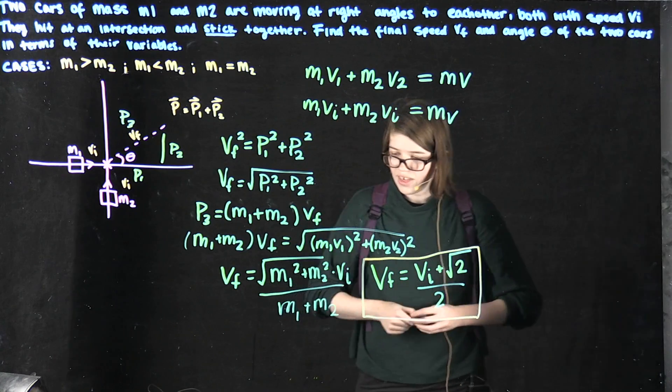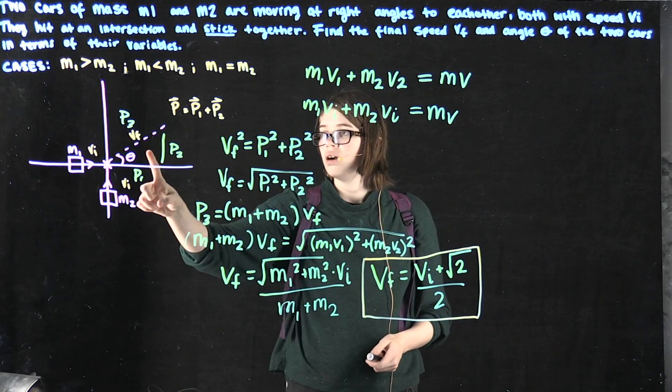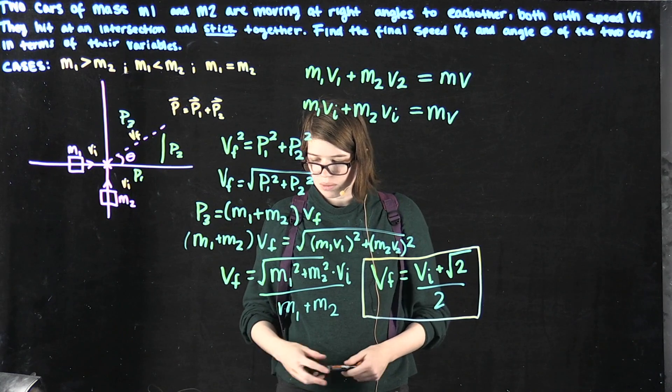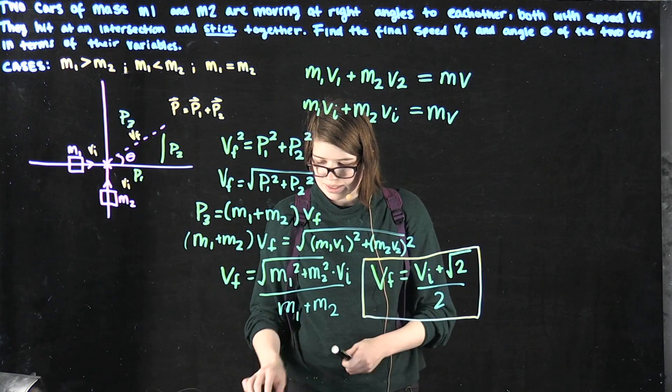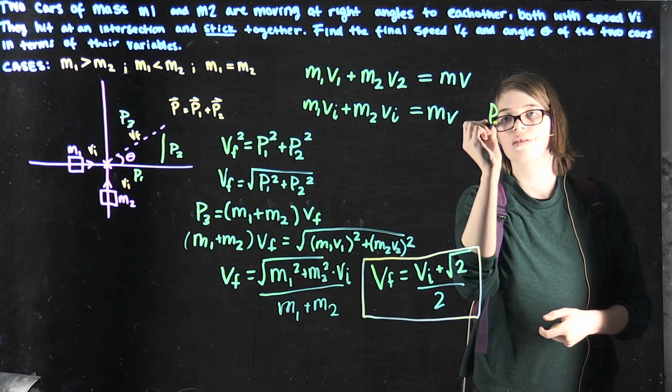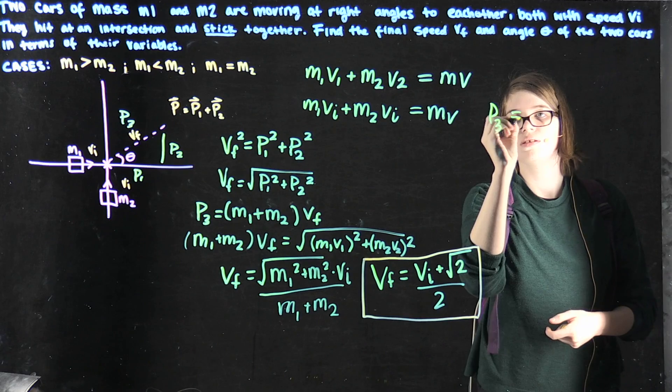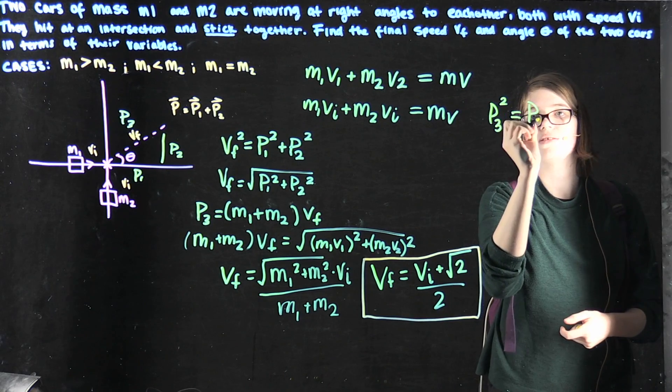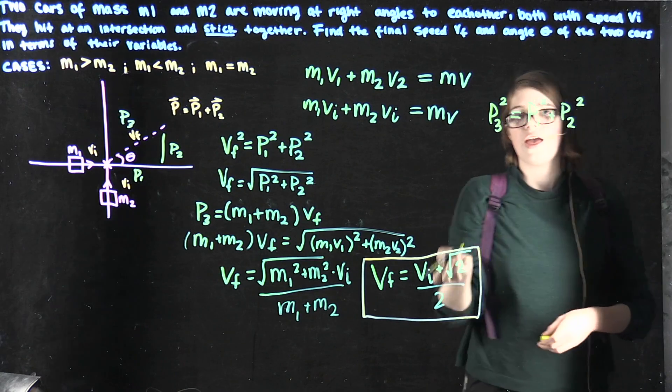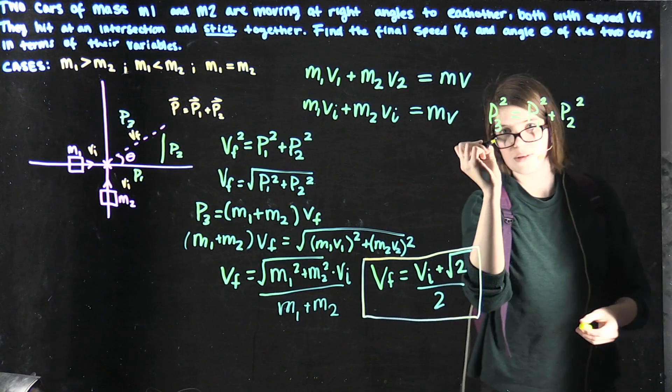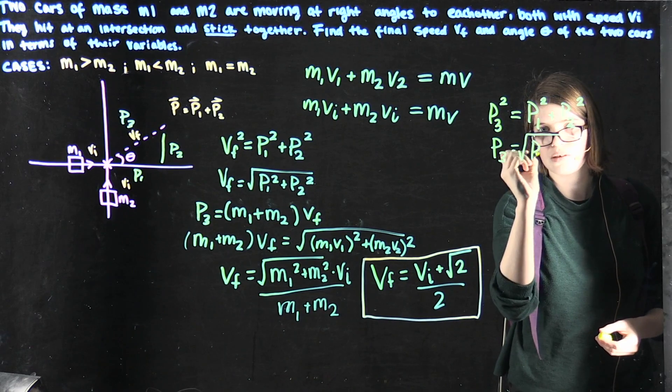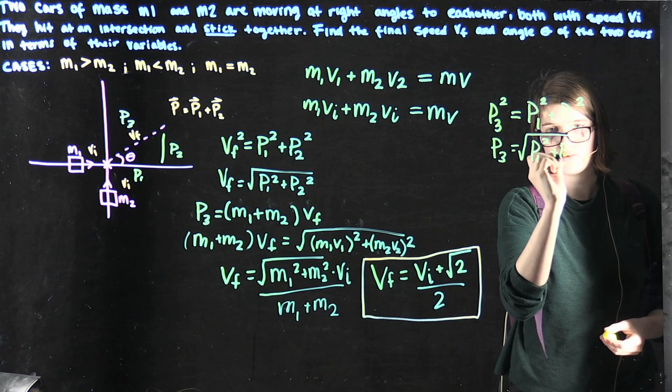Now we can find our tangent value, which is the other thing we need to find. Again, we make use of the Pythagorean theorem and set it so p3 squared equals p1 plus p2 squared. Then p3 is equal to the square root of p1 squared plus p2 squared.